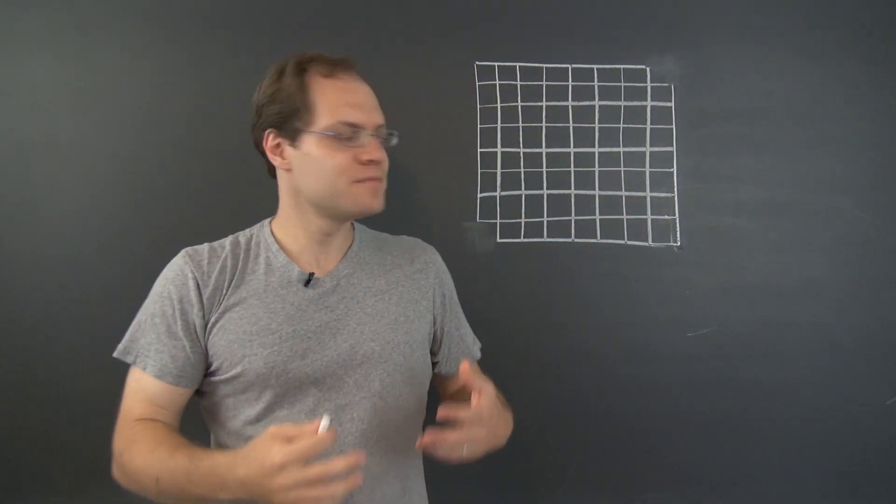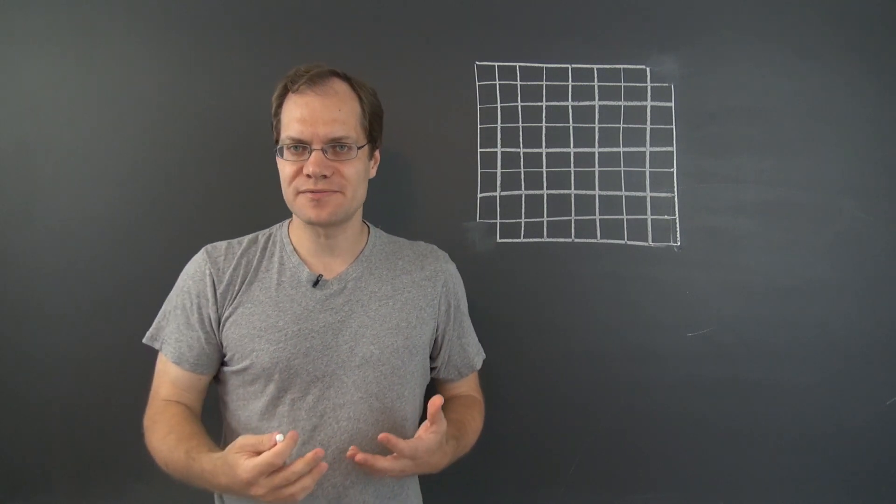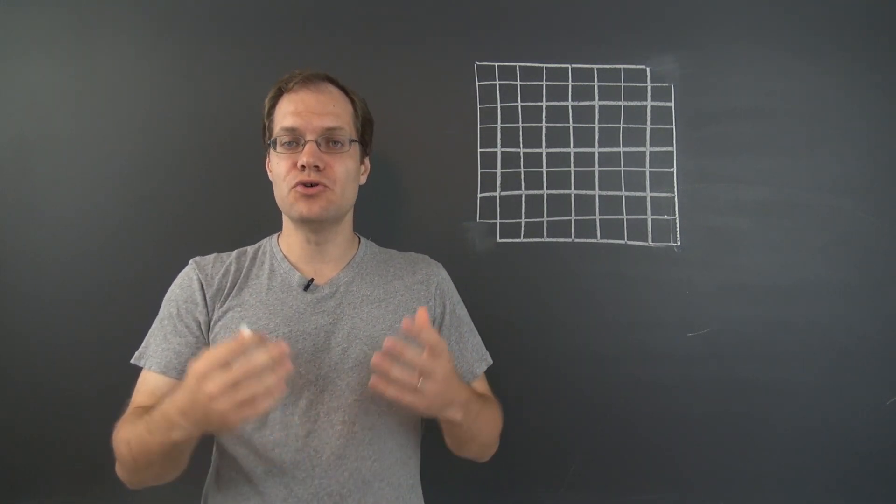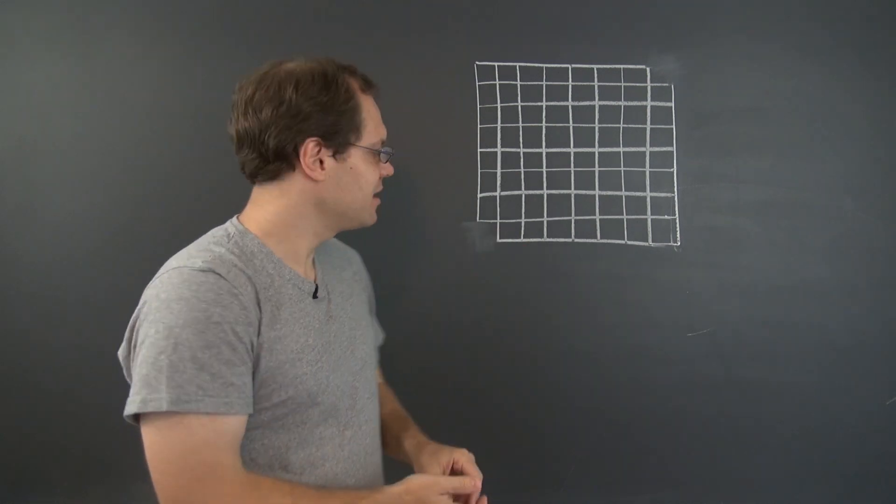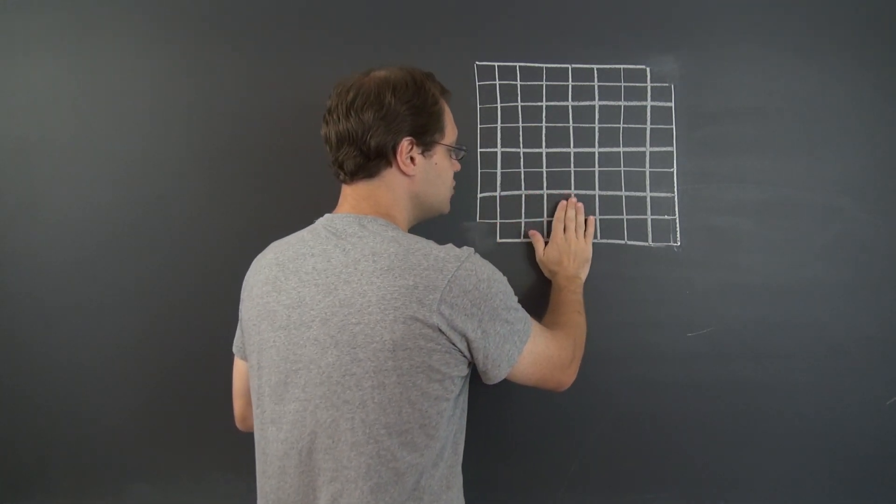And that you have, so now you have 62 squares. And you also have 62 divided by 2, that's 31 wooden rectangles that can cover two adjacent squares.